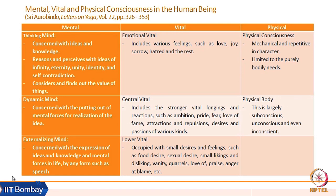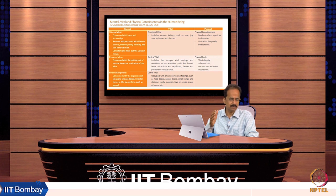Then comes the vital aspects. In the vital aspects there are emotional vital, central vital, and lower vital, correlated with Pranamayakosha and Manomayakosha. Emotional vital is about emotions such as love, joy, sorrow, and hatred. The central vital includes stronger vital longings such as ambition, pride, fear, love for fame, attraction, repulsions, desires, and passions — these are the drivers, which is why it is called central vital. The lower vital is occupied with small desires and feelings such as desire for food, desire for sex, small likings and dislikings, small quarrels, praise, anger, and blame.